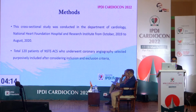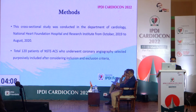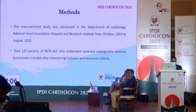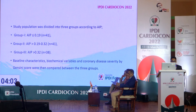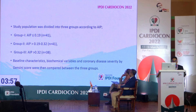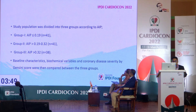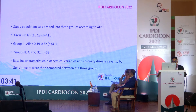This cross-sectional study was conducted in the Department of Cardiology, National Heart Foundation Hospital and Research Institute from October 2019 to August 2020. A total of 120 patients with non-STE ACS who underwent coronary angiography were purposively selected after considering inclusion and exclusion criteria. The study population was divided into three groups according to AIP: group 1 less than or equal to 0.19, group 2 more than 0.19 to 0.32, and group 3 more than 0.32. Biochemical variables and coronary disease severity by Jensen score were then compared between the three groups.